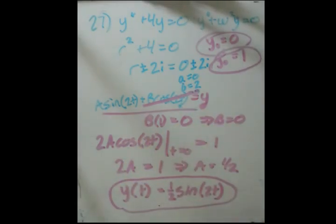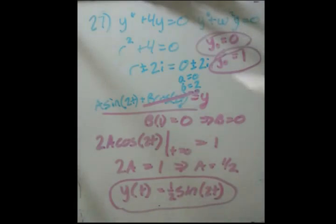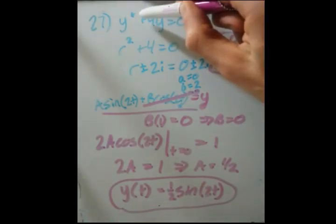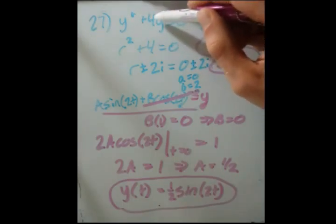So this is our specific solution given those initial conditions. Same method. Same concept. But you might have been able to recognize that this is in the form omega squared. Now if we had a minus 4y, we'd bring the 4y over and we would say what second derivative is a constant multiple of itself.